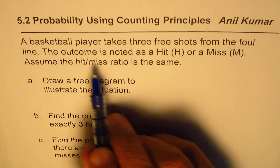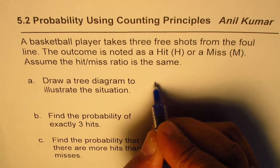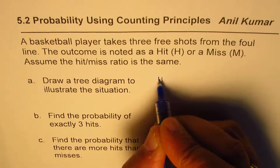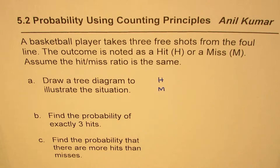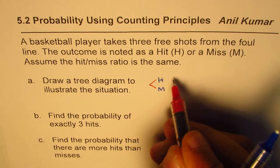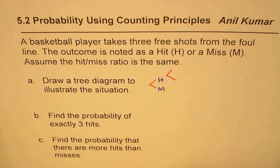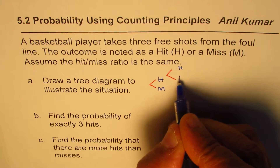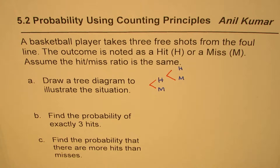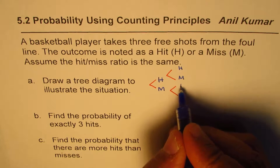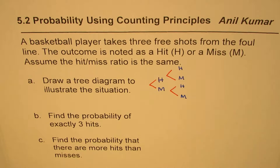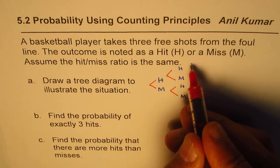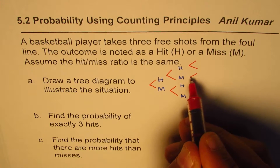So there are three trials. In the first trial you could get either a hit or a miss — both are equally likely. In the second trial, again you could get a hit or a miss. If there was a miss, you could again get a hit or a miss.